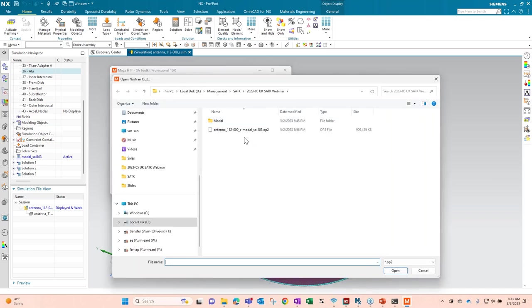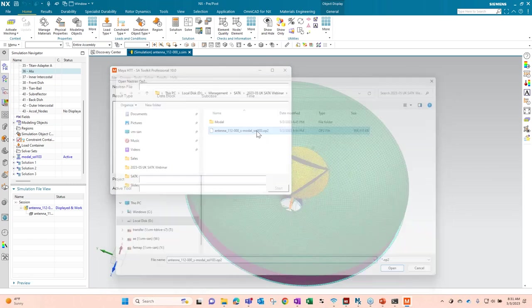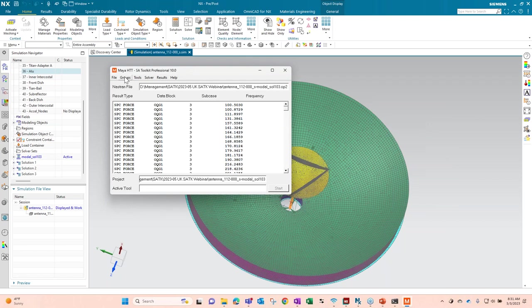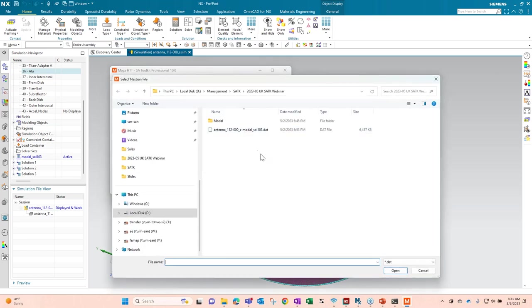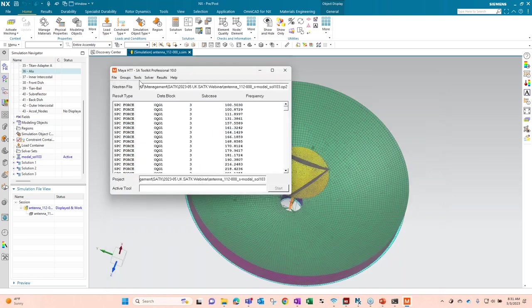So again, what we'll do, we'll go ahead and open that OP2. This is the results file from your Nastran Solution 103 modal. I've opened that up. And then a key feature that's very useful is you can import the groups as well. So I had, you saw I had different groups here. I can import those from the Nastran file. Or if you're using FEMAP, you can import them from there directly. That just comes from the input.